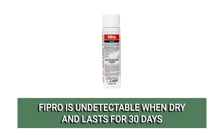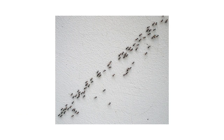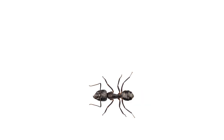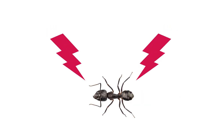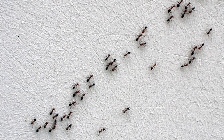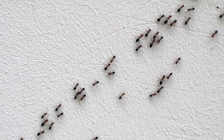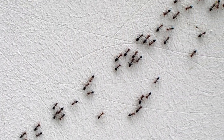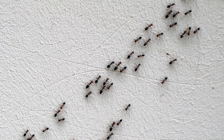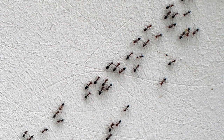Fipro is undetectable by pests when dry, and it will leave a controlling residual effect that will last for up to 30 days, making this product especially good for treating ants. Affected pests will have their nervous system impacted, but will die slowly, typically in a few hours. Pests that walk through treated areas unknowingly pick up the poison and transfer it to the rest of the colony, systemically eliminating the infestation.